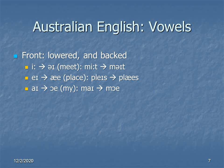Moving a little further down, we come to the /eɪ/ diphthong, which simply drops a little lower in the mouth, becoming /aɪ/. So PLACE becomes PLICE. And this lowering of the /eɪ/ diphthong to /aɪ/ pushes the /aɪ/ diphthong back further in the mouth, so /aɪ/ becomes /ɔɪ/. And thus the word MY becomes MOY. So if I were Australian and wanted to tell you to meet me at my place, I would say something like, MAIT ME AT MOY PLICE.